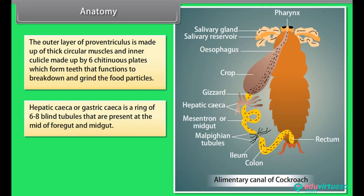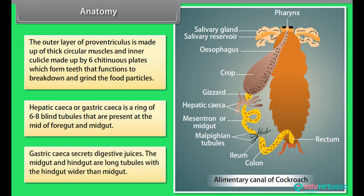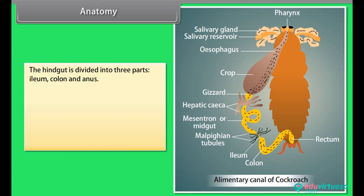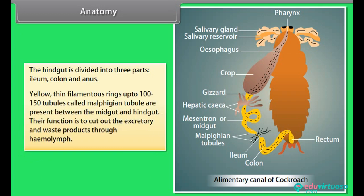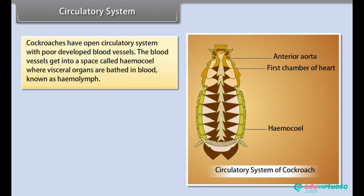Hepatic caecae or gastric caecae is a ring of six to eight blind tubules present at the junction of foregut and midgut; they secrete digestive juices. The midgut and hindgut are long tubules, with the hindgut wider than the midgut. The hindgut is divided into three parts: ileum, colon and anus. Yellow thin filamentous malpighian tubules — up to 100 to 150 — are present between the midgut and hindgut; their function is to remove excretory waste products through hemolymph.